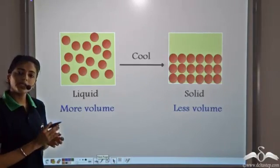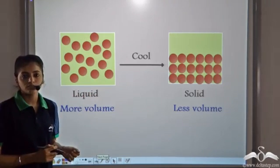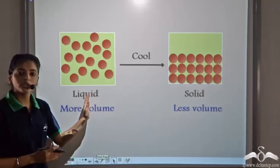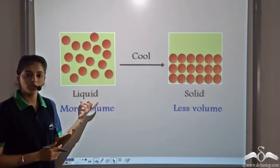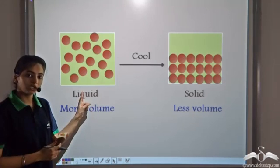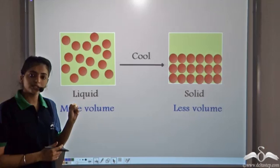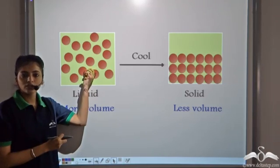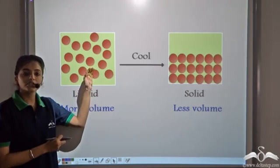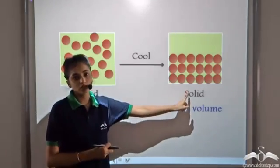For any substance, when the liquid state is changed into the solid state, we cool the liquid state — that is, we extract heat from it. When we extract heat from the liquid state, the temperature decreases, the kinetic energy of the particles decreases, and so the speed of the particles decreases. Hence, the particles come closer to each other and the inter-particle spaces decrease. And so the liquid state changes into the solid state.